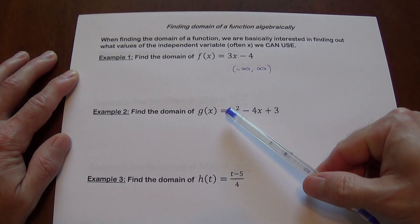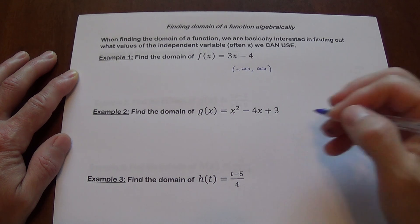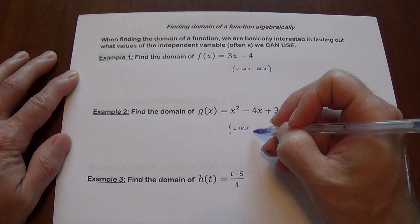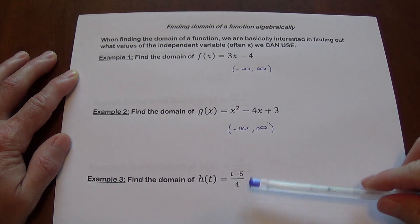What about this one? Here we've got x squared minus 4x plus 3. Some of these functions may look familiar. So what is the domain here? Again, we can use any value of x. There's absolutely no restriction why we cannot use a specific value. So it's also going to be all real numbers, negative infinity to infinity.